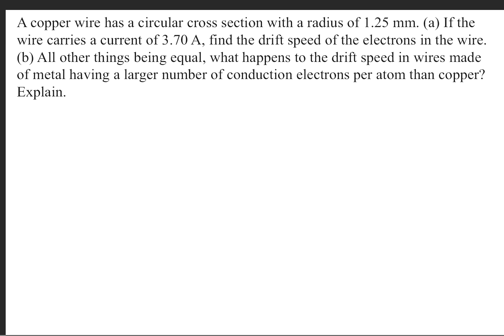In order to solve part A, we're going to need to use this formula right here. The drift speed is equal to the current divided by the density of the electrons in the specific wire, times the charge of the electrons multiplied by the cross-sectional area.